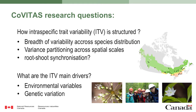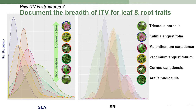Now to the research questions. We had two broad types of questions. First, we wanted to understand how intraspecific trait variability is structured — documenting the breadth of variability across the species distribution for our six species, then looking at variance partitioning across the scales we have, and then looking at root and shoot synchronization. Second, we were interested in what are the main drivers of this variation, looking at both environmental variables and genetic variation.